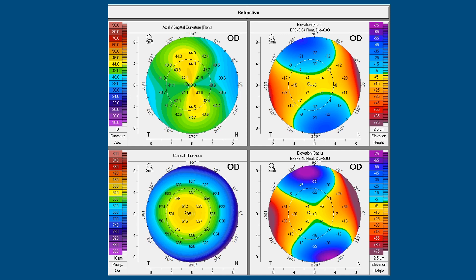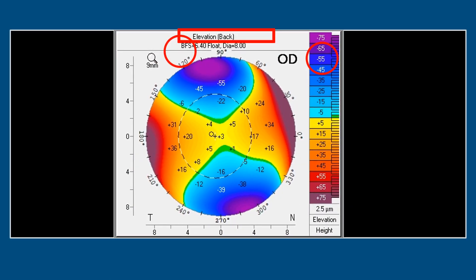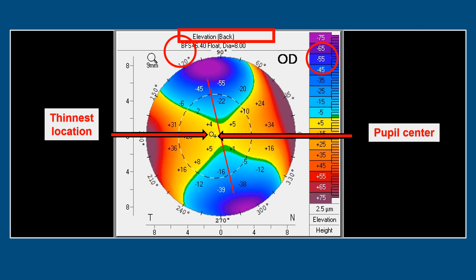Now we go to the elevation maps. The posterior elevation map shows the back of the cornea in comparison to the best fit sphere — not the best fit toric ellipsoid, which is explained in VPL 1.1. The arrow shows the direction of the steep axis, the plus sign is the pupil center, and the black circle is the thinnest location. The values plus 10, plus 5, etc. indicate how much the surface is elevated compared to the best fit sphere.